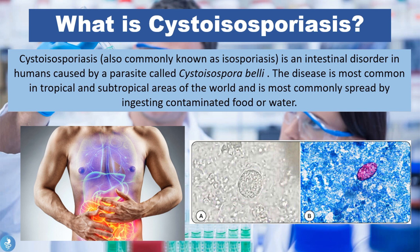From this definition we get that cystoisosporiasis is a parasitic infection caused by the specific parasite called Cystoisospora belli — and this is actually what the parasite looks like on screen. This infection commonly affects the gastrointestinal tract, causing an intestinal disease. It is very common in tropical and subtropical regions and is usually spread by ingesting contaminated food or water sources.